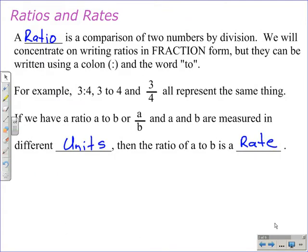A ratio is a comparison of two numbers by division. We will concentrate on writing ratios in fraction form, but they can be written using a colon and the word 'to'. For example, 3:4, 3 to 4, and 3/4 all represent the same thing.